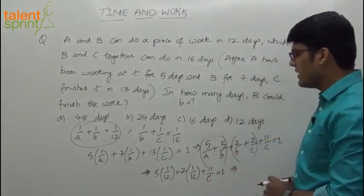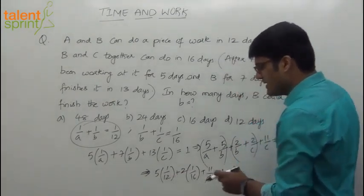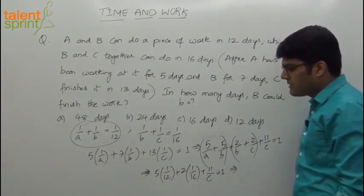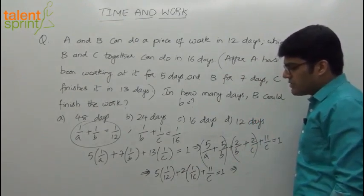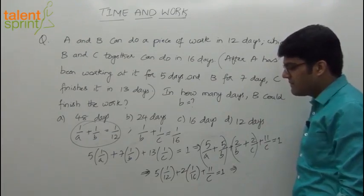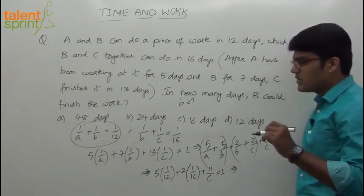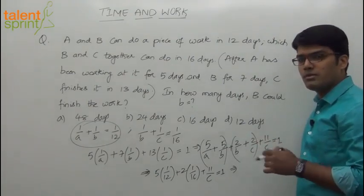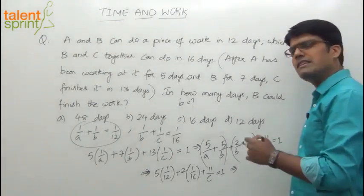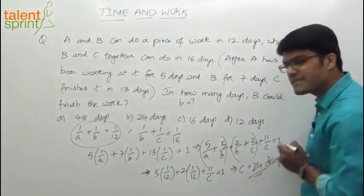Now simplify this. What happens? 5 by 12 plus 2 by 16. 48 is the LCM. This goes 4 times, so 20. And this goes 3 times, so 6. 26 by 48. 1 minus 26 by 48 is 22 by 48. So 11 by C equals 22 by 48. 2 gets cancelled, 11 gets cancelled 2 times. So 1 by C equals 2 by 48 or C equals 24. So from this we get C equals 24. C takes 24 days.